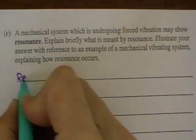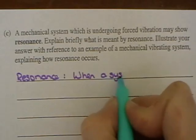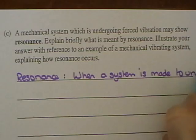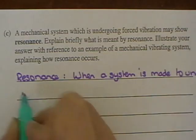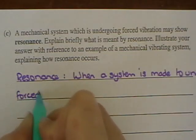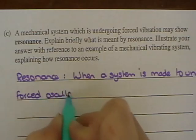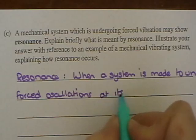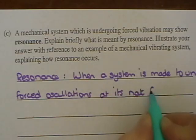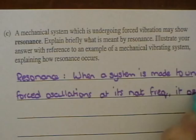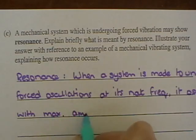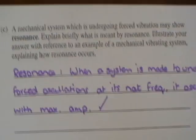So resonance: when a system is made to undergo forced oscillations at its natural frequency, it oscillates with a maximum amplitude. There's two bits to that really. There's only one mark for that part. That's the one mark.